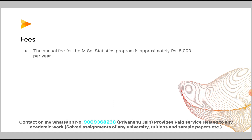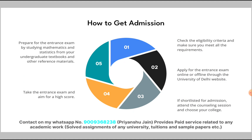To get admission, first check your eligibility criteria and make sure you meet all the requirements, including having a bachelor's degree. Then apply for the entrance exam online or offline through the university's website. After taking the entrance exam, aim for a high score.